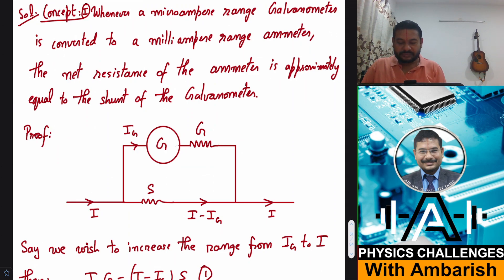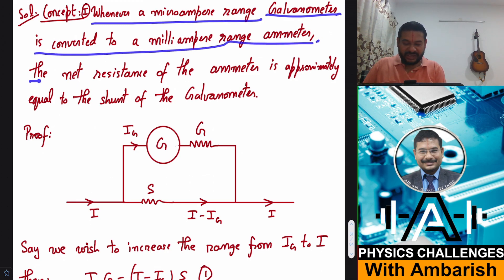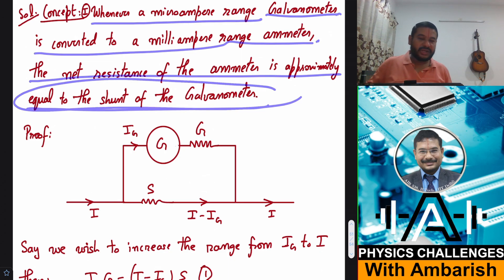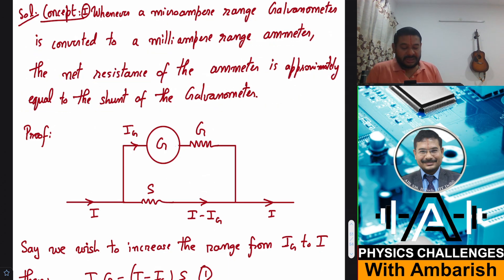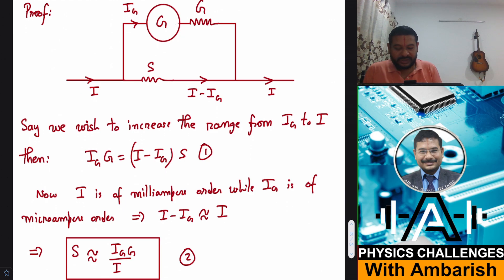So what's the concept here? Whenever a microampere range galvanometer is converted into milliampere range ammeter, the net resistance of the ammeter is approximately equal to the resistance of the shunt itself. Why? Because generally the shunt resistance will be very very small. So let me just prove it to you very briefly.